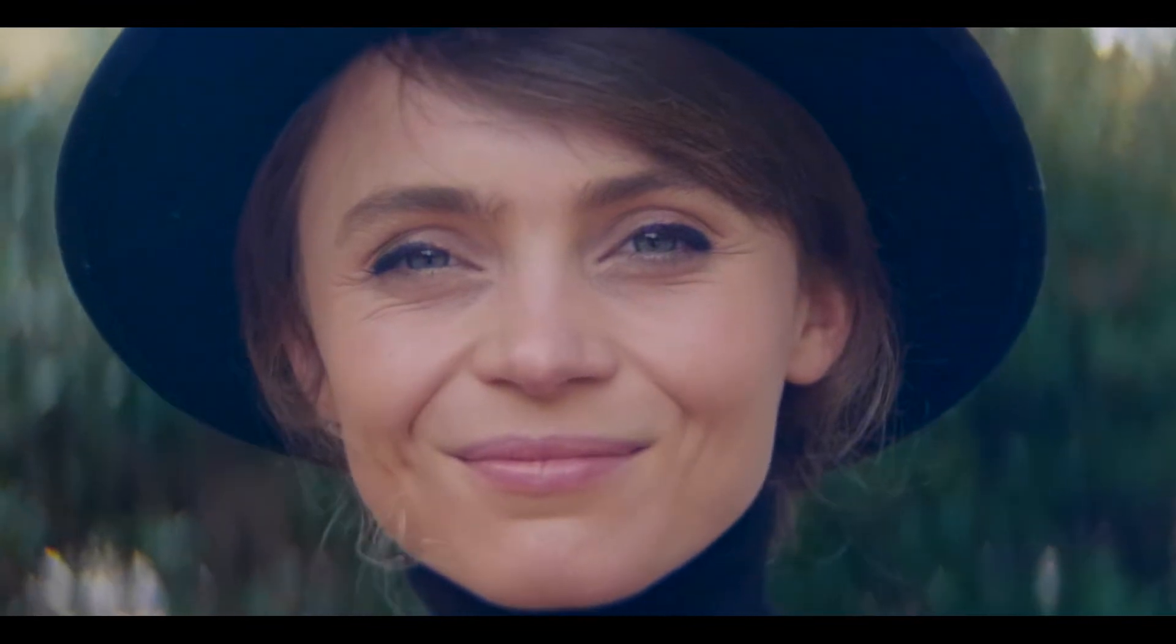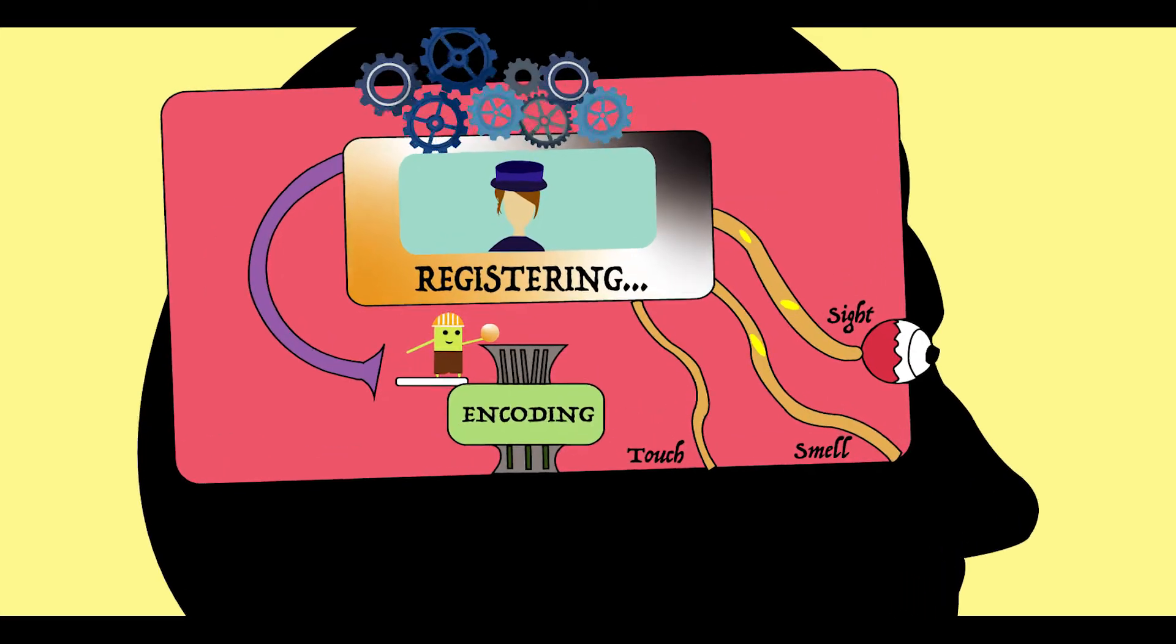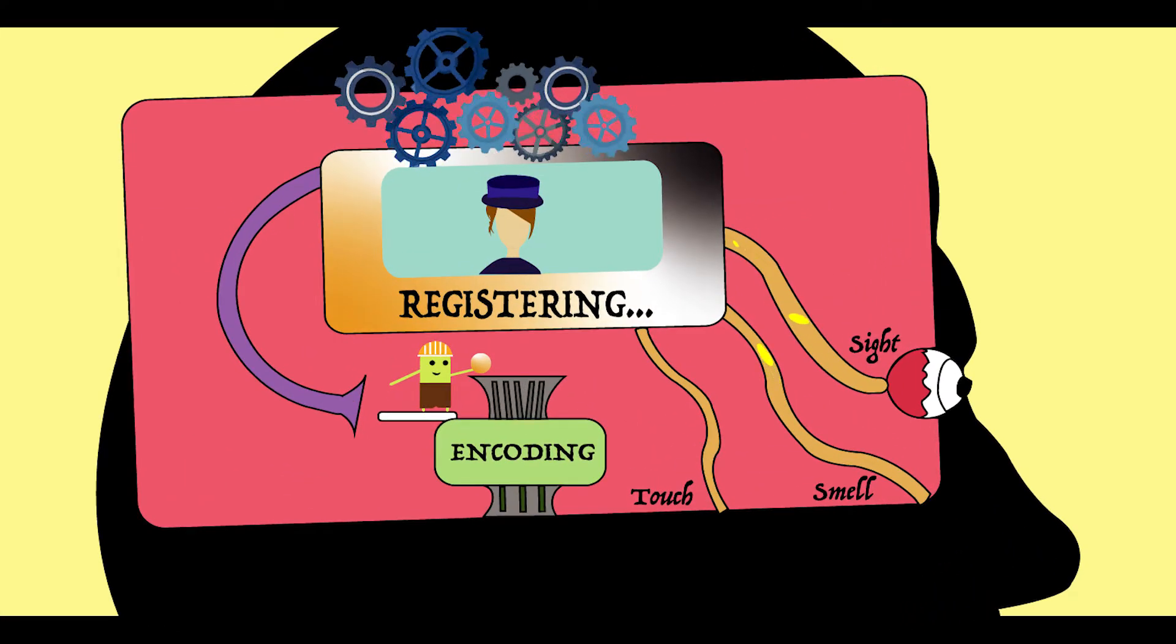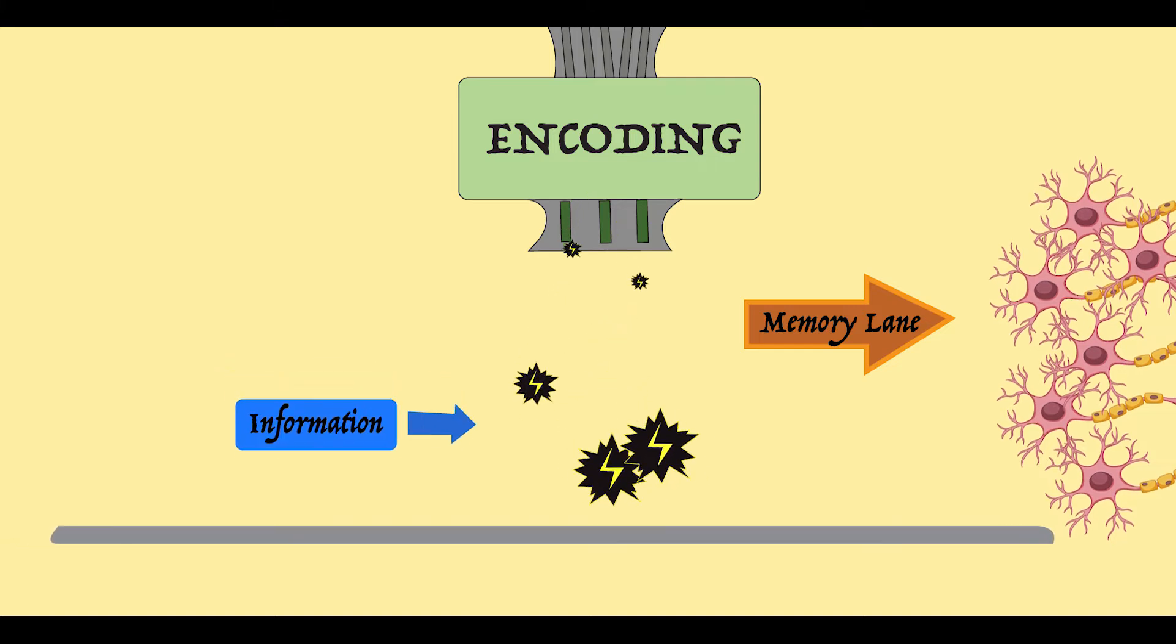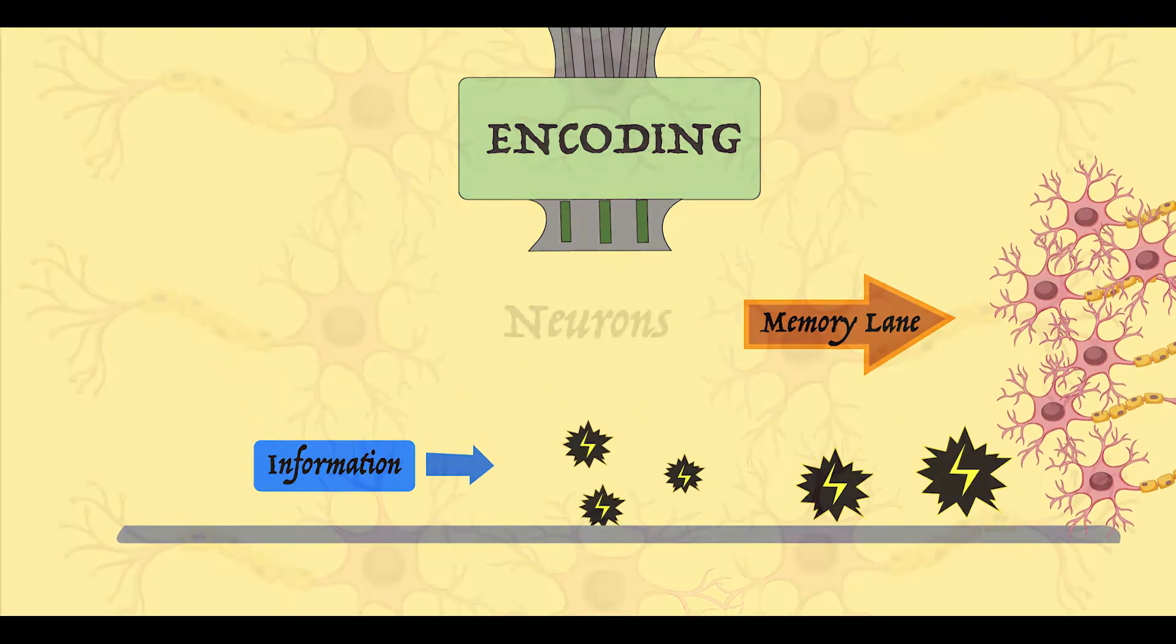First, the brain registers the memory, which at this point are the perception and senses associated with it. For example, you on your first date, or simply remembering your phone number. This process is called encoding, where the information is converted into a construct that is stored in the brain.